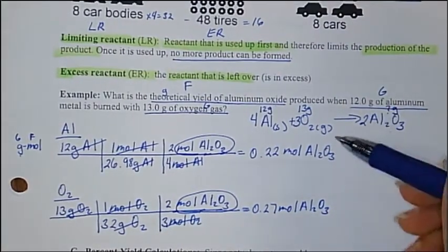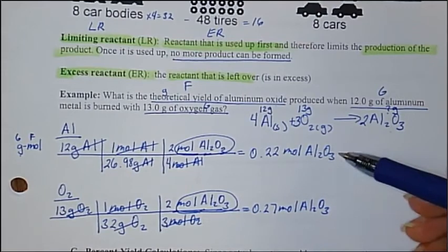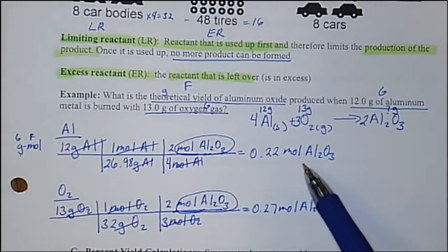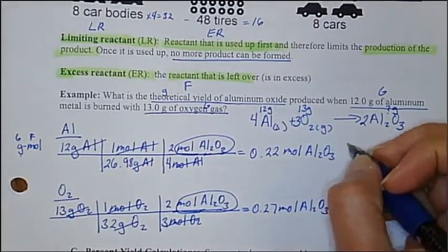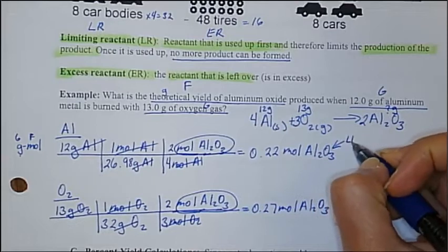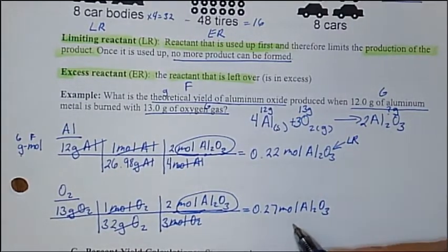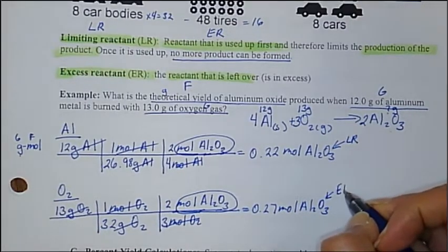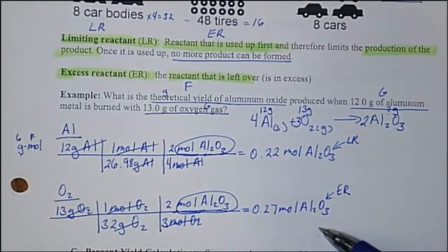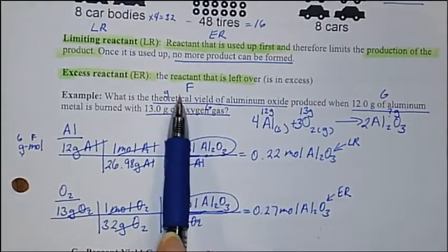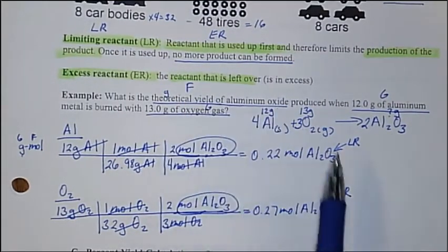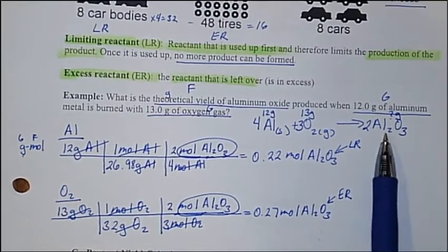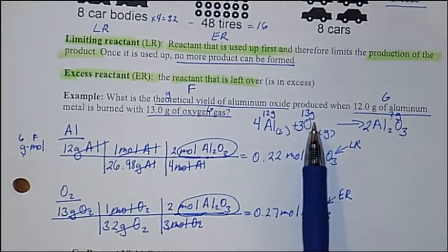Looking at these two numbers, you can see that aluminum will produce the least amount of aluminum oxide — so aluminum will be our limiting reactant. Since oxygen produces a larger amount of aluminum oxide, it will be our excess reactant. In order to figure out the theoretical yield of aluminum oxide, we are going to use the limiting reactant. We don't even have to worry about oxygen in this case — we can just go straight to aluminum.